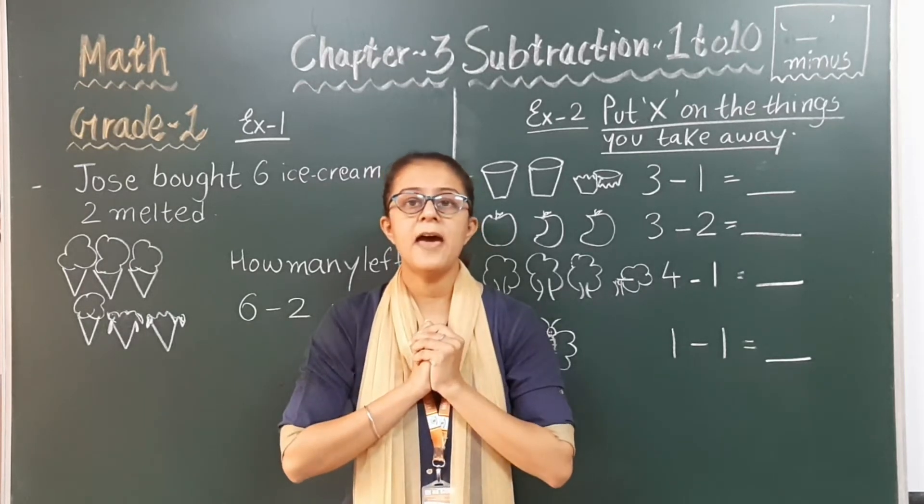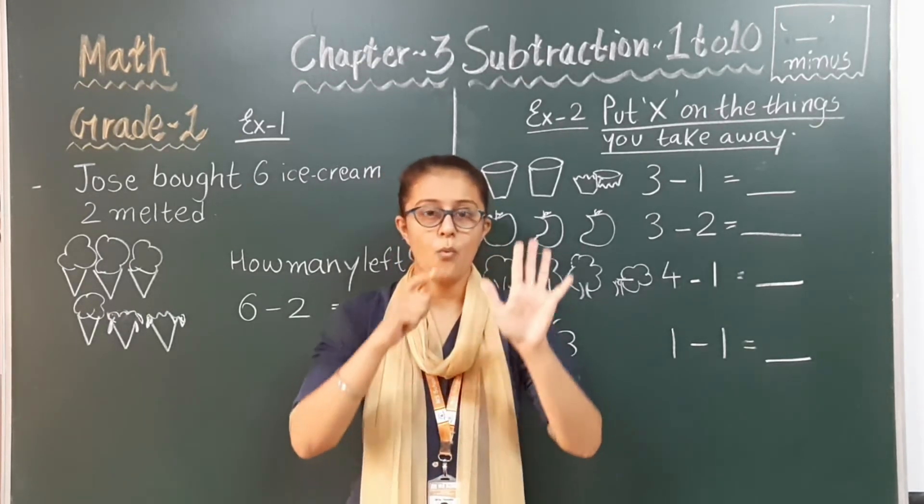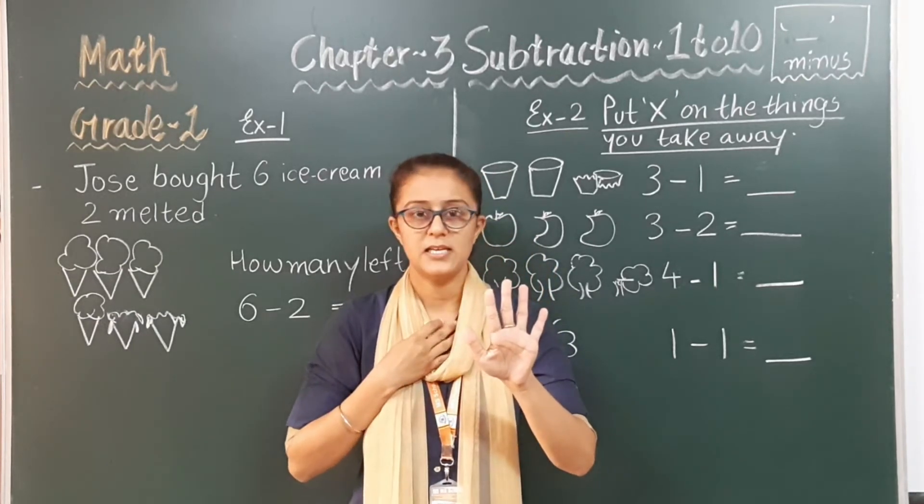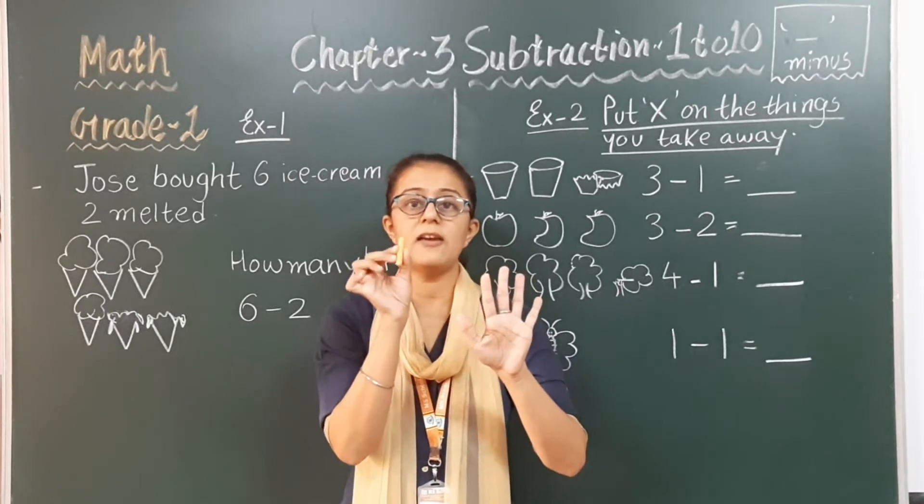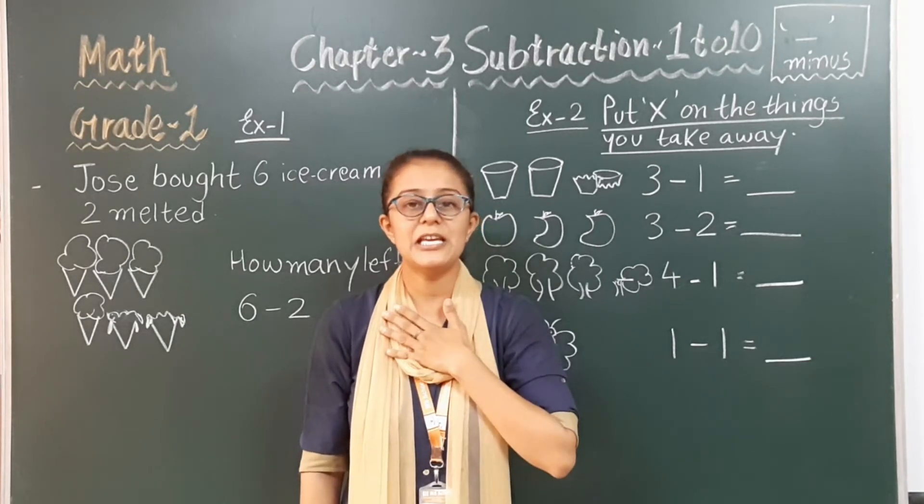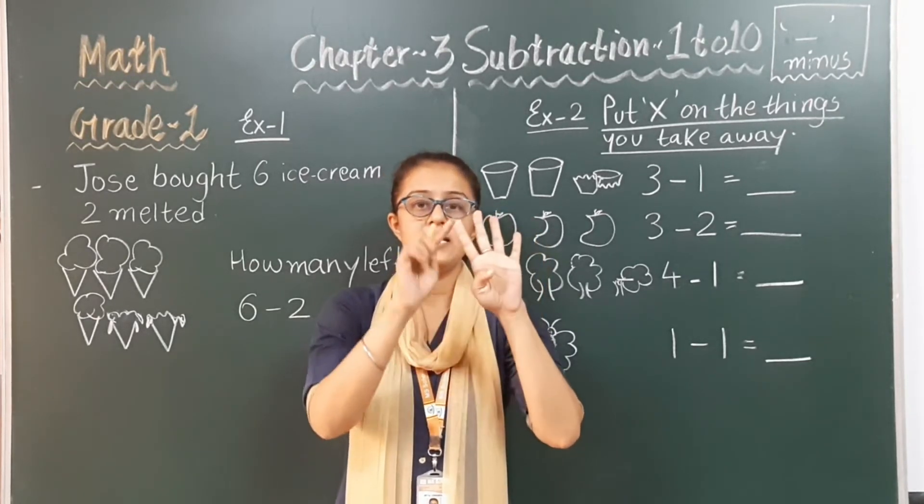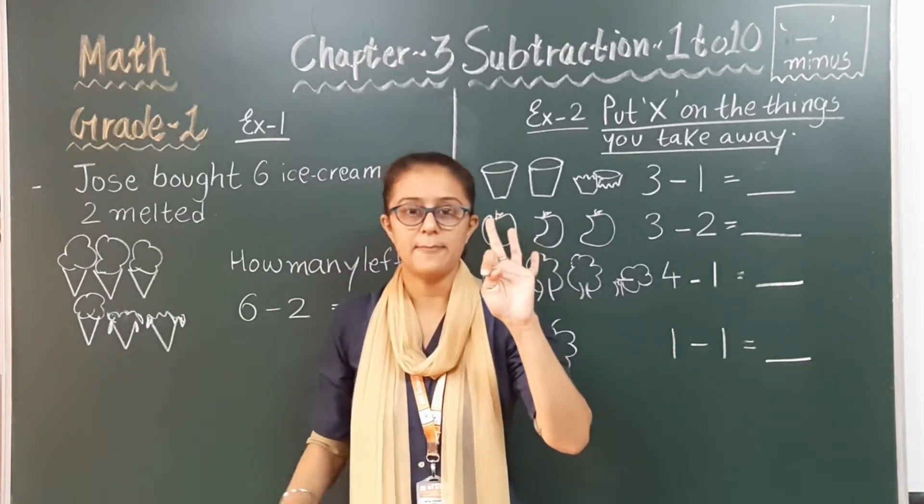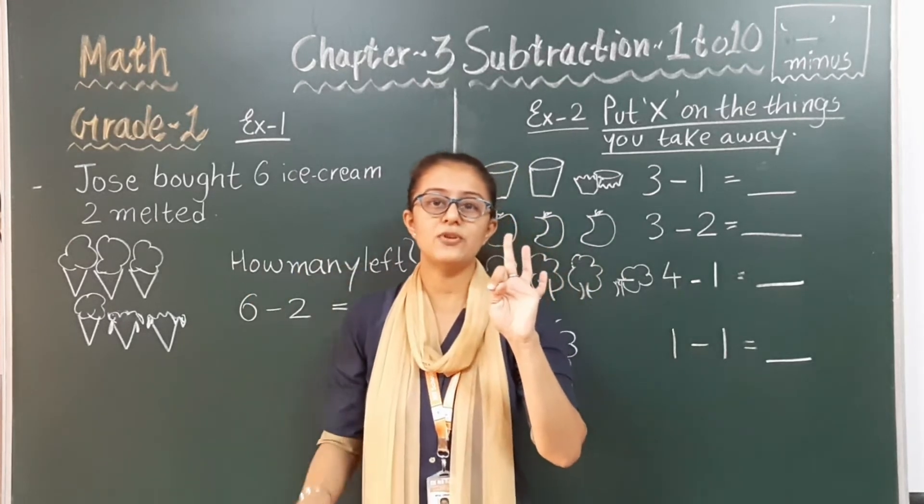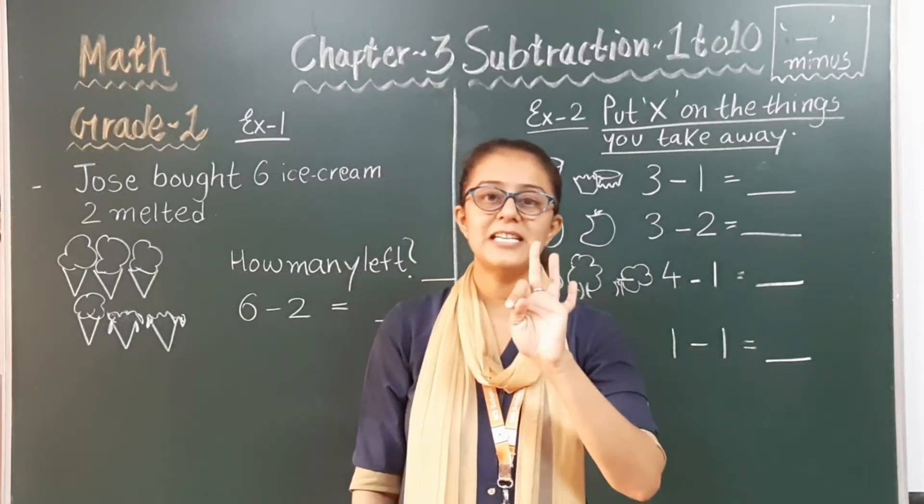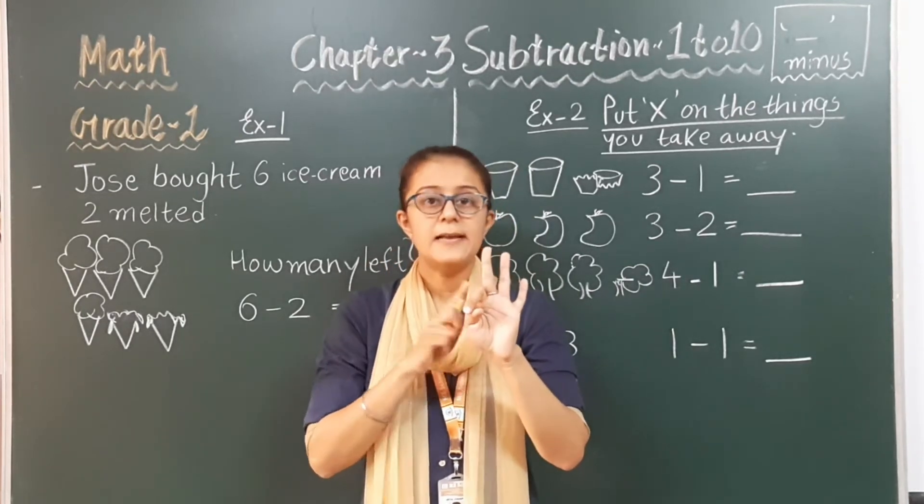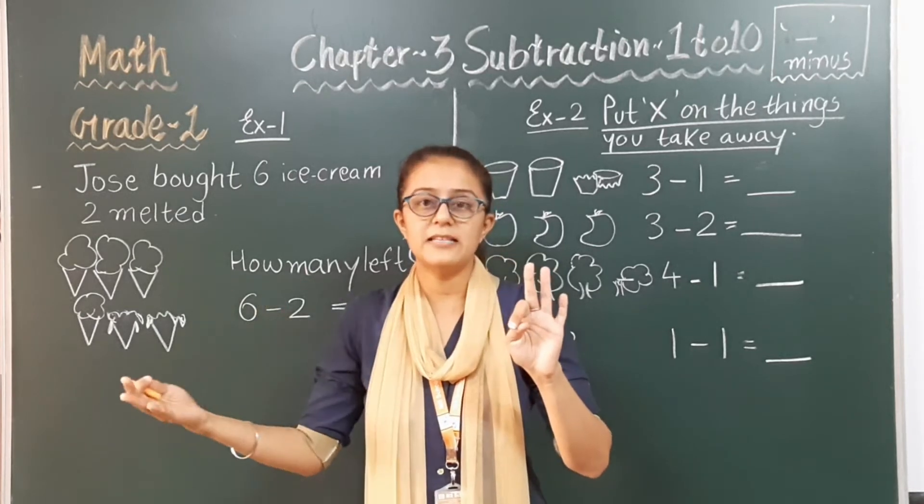For example, I am having five chalks with me. One, two, three, four and five. Total five chalks with me. Now, if I give one and two to another person, if I give two chalks.